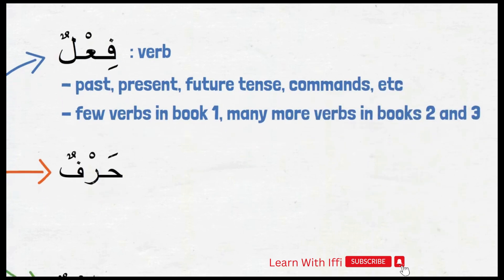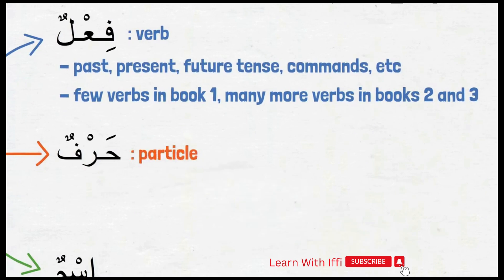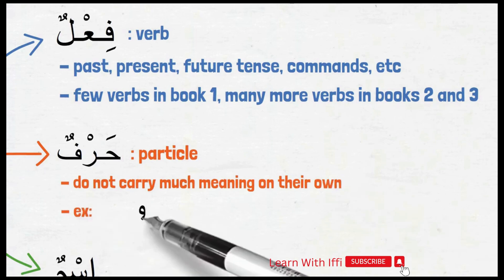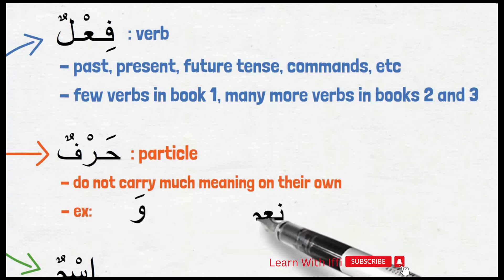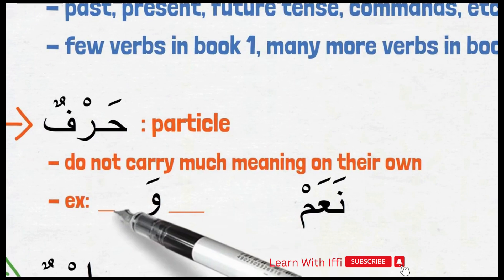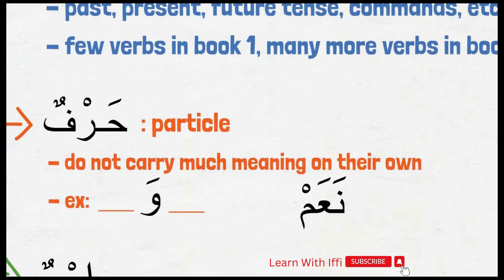The second category is harf. It is often translated into English as particle. The harf does not carry a complete meaning on its own, but it is a very useful group of words to build sentences with. For example, wa is harf. Consider wa, which means 'and' — we expect to see words on both sides of wa, like kitabun waqalamun. But when we say wa alone, we can't think of anything. That is why wa is considered harf.